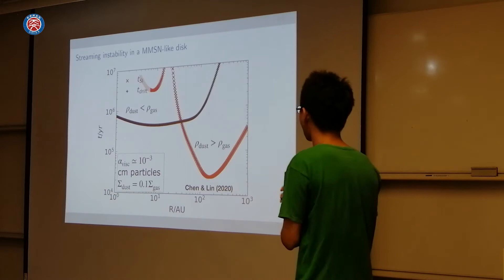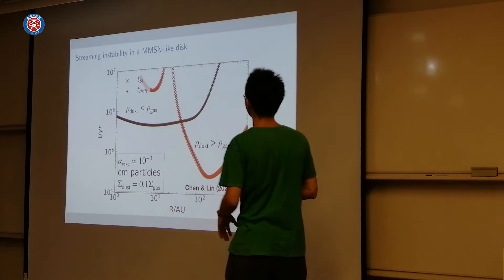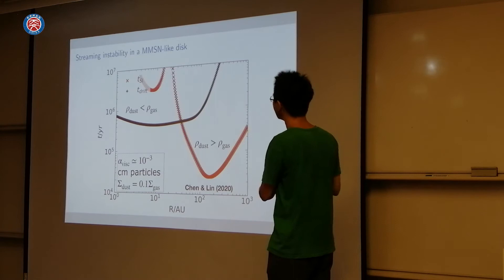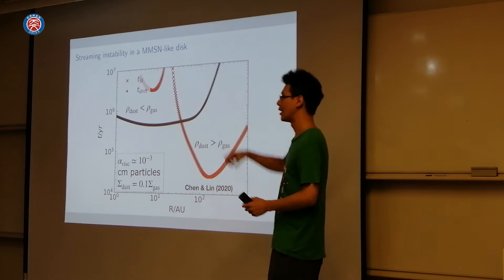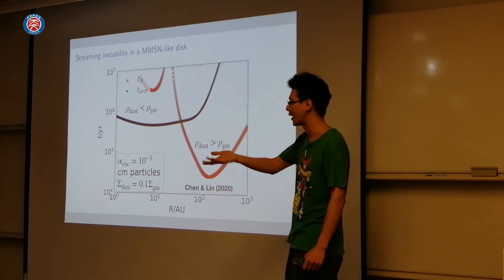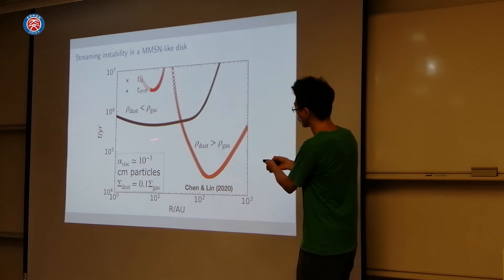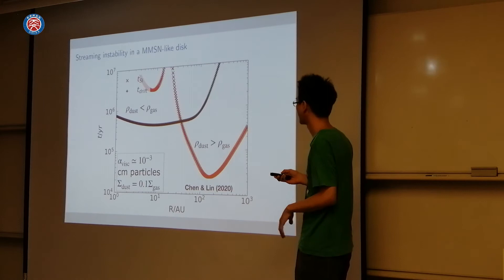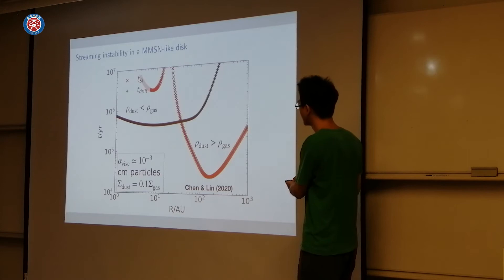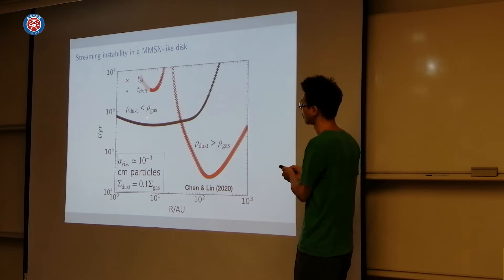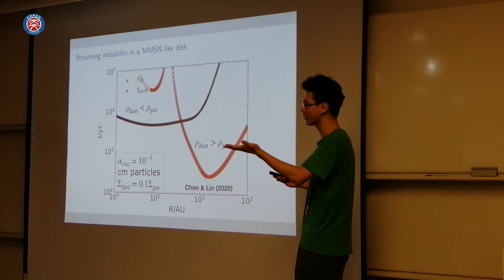This is a plot applying our analytic theory to a physical model of a protoplanetary disk. In red is the growth timescale of the streaming instability in years as a function of radius. The black curve is the drift timescale of the particle — if you drop a particle in a protoplanetary disk, it would drift towards the star in some finite time. Inside a certain radius, drift timescales are short, so you would lose all your solid particles before the instability grows. But at large radii, for example 100 AU, the instability can grow fast compared to both the drift timescale and the disk lifetime of a few million years.